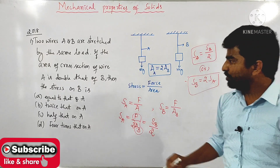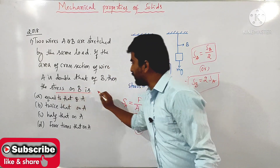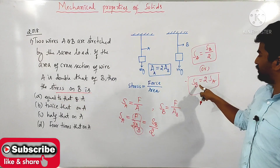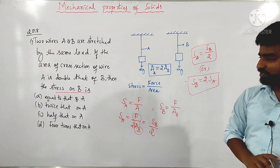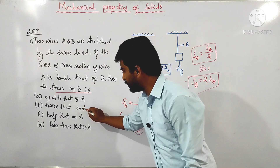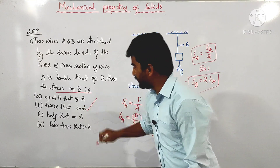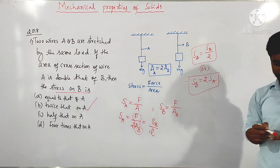So the question asks: what is the stress on wire B? Stress on wire B is equal to 2 times the stress on wire A — that is, twice that of A. The answer for the question is option B.